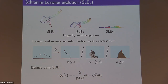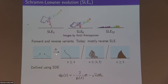SLE comes in two variants: forward and reverse SLE. Today I'm mostly going to talk about reverse SLE. This is a random growth process where you start with the plane and a marked point at time zero. At time t, you have a random curve obtained by pushing the plane towards a red point and upwards. The blue region can be conformally mapped to the region at time t by a map g_t. The definition of SLE is in terms of stochastic differential equations.